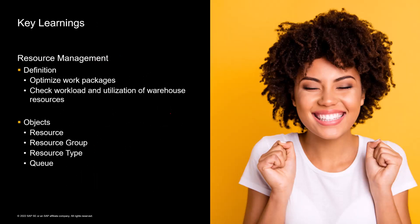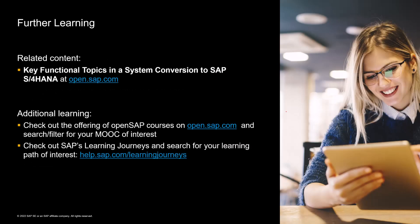Before ending this MicroLearning, let's recap what we have covered so far. The definition of resource management is to ensure the optimized execution of warehouse activities. Warehouse management in SAP S/4HANA Cloud optimizes work packages and automatically assigns them to employees. The most important objects are resource, resource group, resource type, queue, and queue type. Be aware from the beginning what is really needed since these objects depend on each other. For further learnings, check out the OpenSAP website. Thank you for watching this MicroLearning. Goodbye.